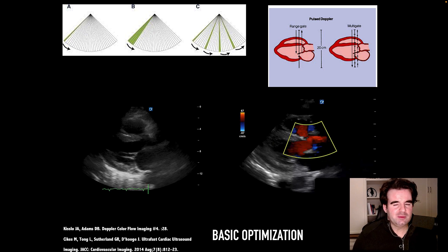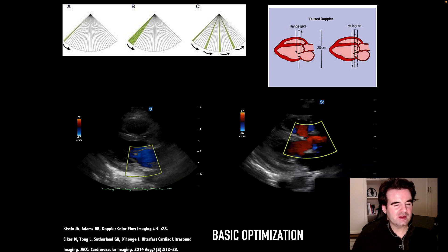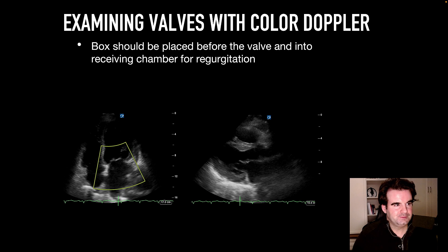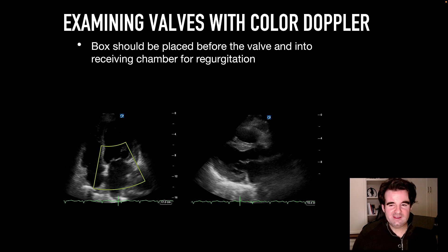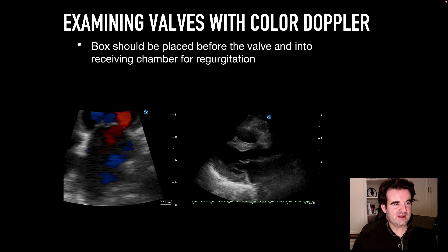Color Doppler functions by sending multiple short pulses across the region of interest. Every pulse sent needs a waiting period for listening in which you're not sampling. Hence, the wider the box, the longer it takes. So generally, try to keep the boxes focused on the area of interest. When examining valves for regurgitant or stenotic lesions, we need to be very careful with how those boxes are placed. We're looking for that mosaic pattern of blood as it speeds up to pass through a regurgitant lesion. The color box for regurgitant lesions should include in front of the valve and also into the receiving chamber, giving you a sense of capturing that entire jet.